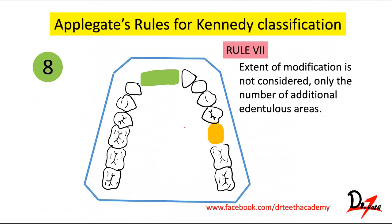Rule seven: the extent of modification is not considered — only the number of additional edentulous areas matters. For example, this is Class III modification one. Even if more teeth within that modification space were absent, you would still say modification one. You don't count the number of missing teeth — you count the number of additional edentulous areas.